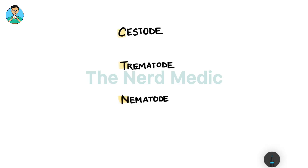Hi, this is Nord Medic and in this video we will talk about the different anti-helminth drugs that we use in common practice. We have basically three groups of helminths or worms: namely cestodes which are flatworms or tapeworms, trematodes which are flukes, and nematodes which are roundworms. We can remember the three classes as CTN, or cartoon network.